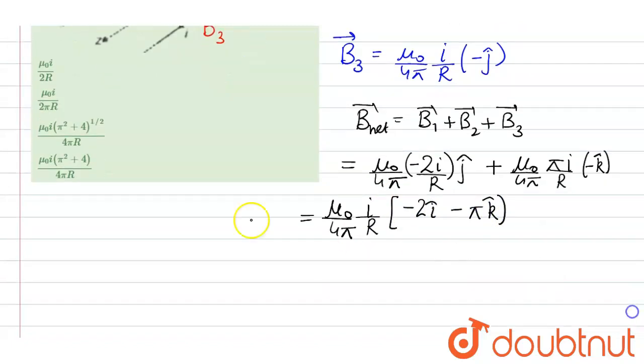Now we have to calculate its magnitude so its magnitude that is B net magnitude can be written as mu naught upon 4 pi i by r times the magnitude. So that means the correct answer of this question will be option 3.